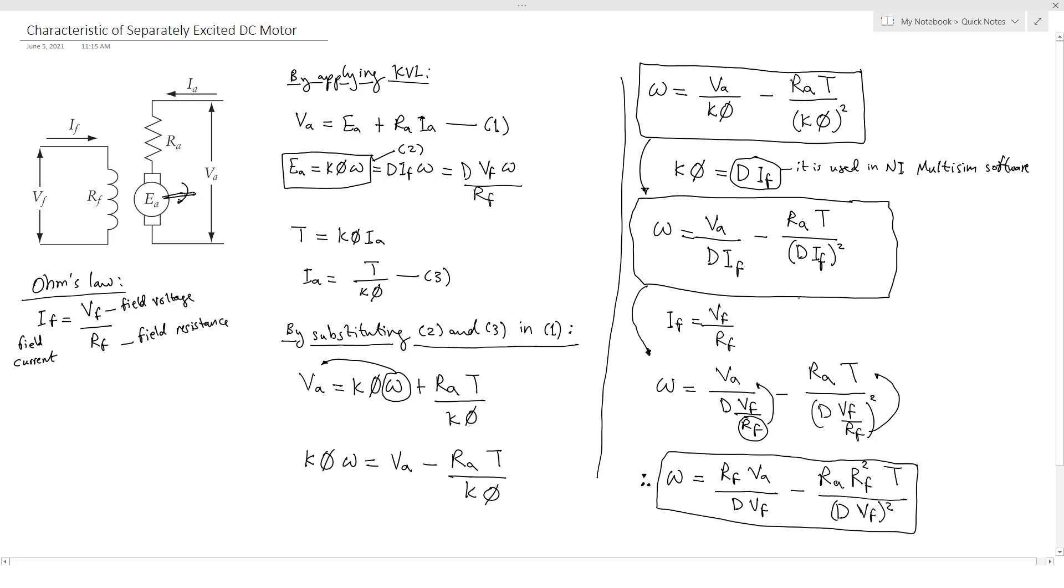By these equations, we can see the speed behavior of separately excited DC motor by knowing the torque, or if VA is variable or VF is variable. And also, sometimes they use variable field resistance so we can also change the speed.